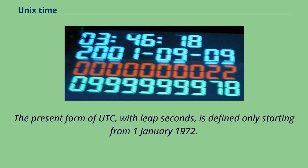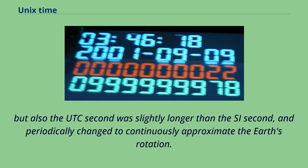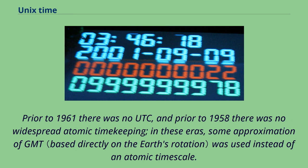The present form of UTC, with leap seconds, is defined only starting from January 1, 1972. Prior to that, since January 1, 1961, there was an older form of UTC in which not only were there occasional time steps by non-integer numbers of seconds, but also the UTC second was slightly longer than the SI second, and periodically changed to continuously approximate the Earth's rotation. Prior to 1961 there was no UTC, and prior to 1958 there was no widespread atomic timekeeping. In these eras, some approximation of GMT was used instead of an atomic timescale.